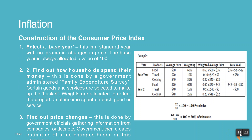Construction of the Consumer Price Index involves three steps. First, select a base year — this is a standard year with no dramatic changes in price, and the base year is always allocated a value of 100. Second, find out how households spend their money — this is done by a government-administered family expenditure survey. Certain goods and services are selected to make up the basket, and weights are allocated to reflect the proportion of income spent on each good or service. Third, find out price changes — this is done by government officials gathering information from firms, and the government then creates estimates of price changes based on this information.